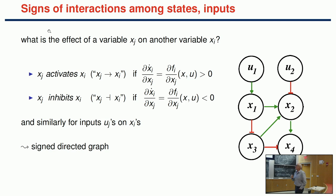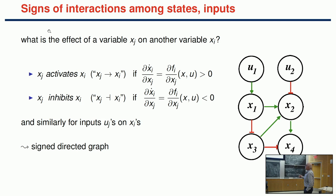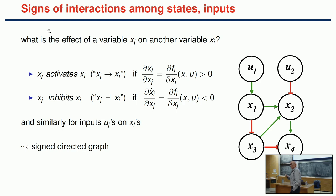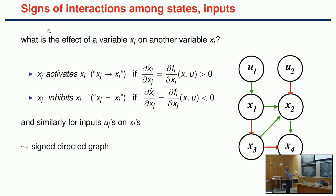The first topic concerns how the sign structure of a network affects behavior. I'll assume that the off-diagonal Jacobian entries have signs that don't change over the state space—the values may change but the signs don't. We say variable X_j activates variable X_i if the partial derivative of the i-th component with respect to X_j is positive, and that X_j inhibits X_i if that Jacobian entry is negative.